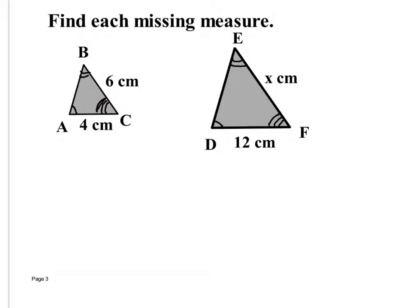These are similar triangles, so the sides are proportional. Here's how I want you to set it up. This method connects to what we've learned the last couple days — like yesterday with maps and modeling where we did model over actual. Here, instead of model over actual, we're going to write small over large: the small figure over the large figure.